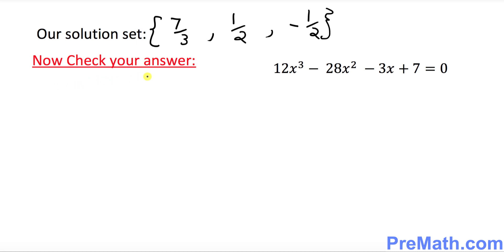The checking our answer is pretty simple. Let me show you an easy way. I want you to get these, whatever you got, three solutions. I want you to add them up. I want you to write down 7 over 3 plus 1 over 2 and plus negative 1 over 2.